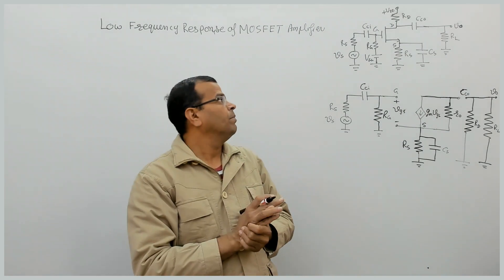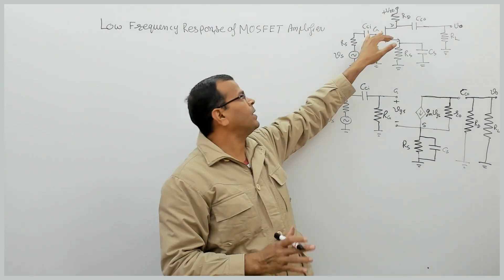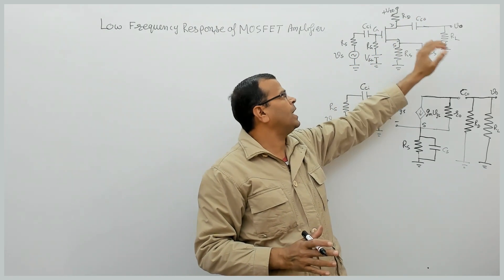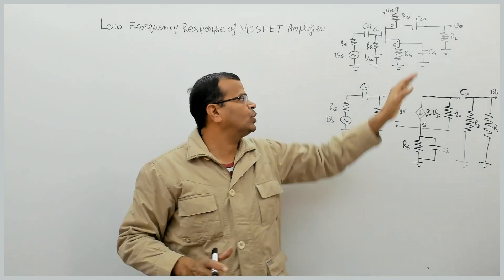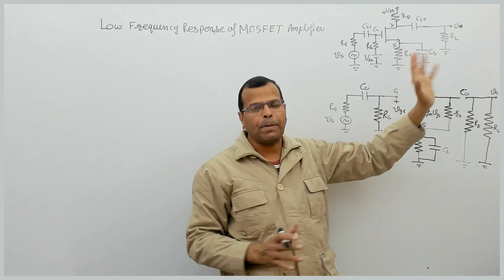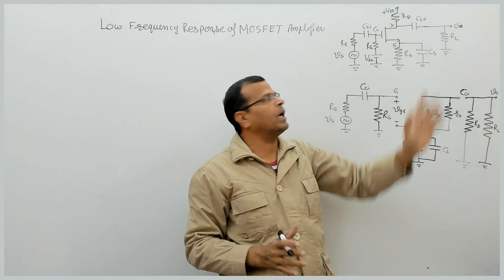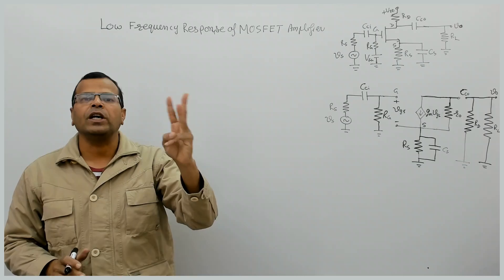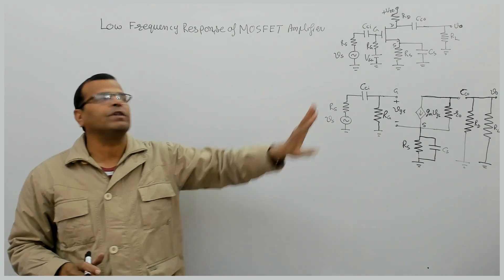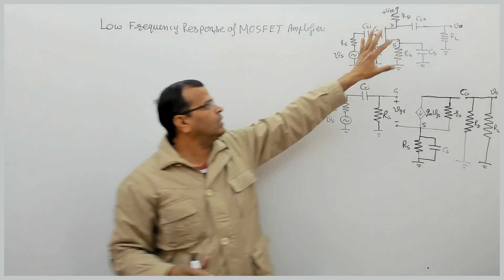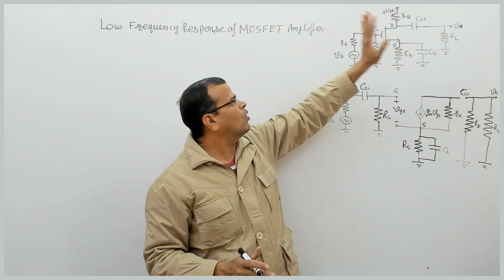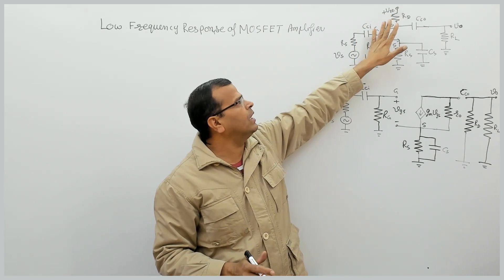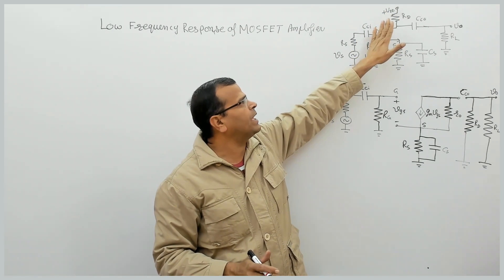Here we have three capacitors: the input coupling capacitor, the output coupling capacitor, and the source bypass capacitor. So there will be three cutoff frequencies associated with this circuit. This particular circuit is a common source MOSFET amplifier.